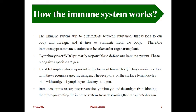Our immune system is primarily the responsibility of WBC cells - white blood cells or lymphocytes. These are primarily responsible for defending the immune system. They recognize specific antigens and identify whether material is foreign or belongs to our body. In lymphocytes, there are two major types: T lymphocytes and B lymphocytes.